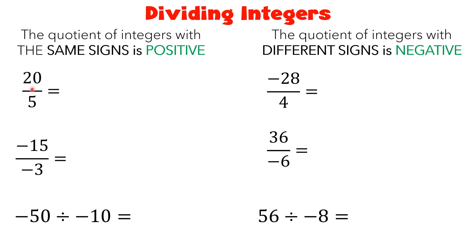Example: 20 over 5, or 20 divided by 5. They are both positive, so your answer must also be positive. And 20 divided by 5 will give us positive 4.